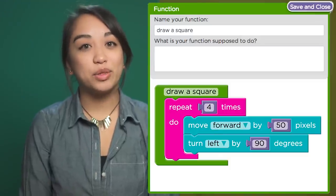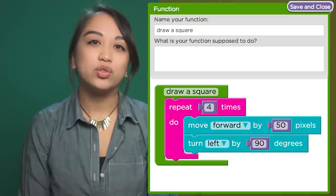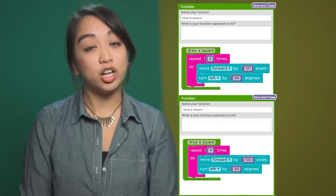Here's a function that draws a square with 50 pixel sides. That's great, but what if I wanted to draw a square with sides of 50 pixels, and another square with sides of 100 pixels?